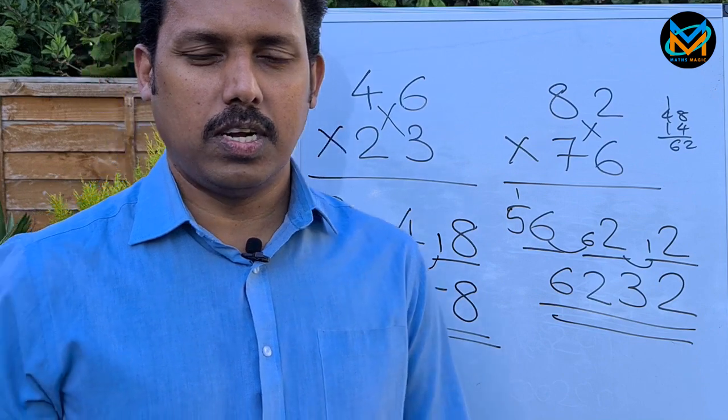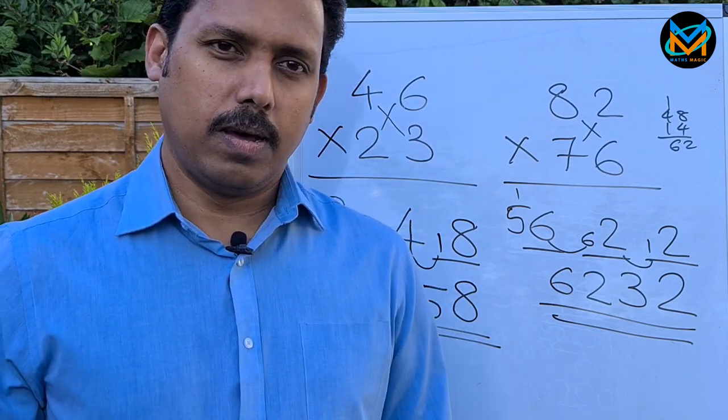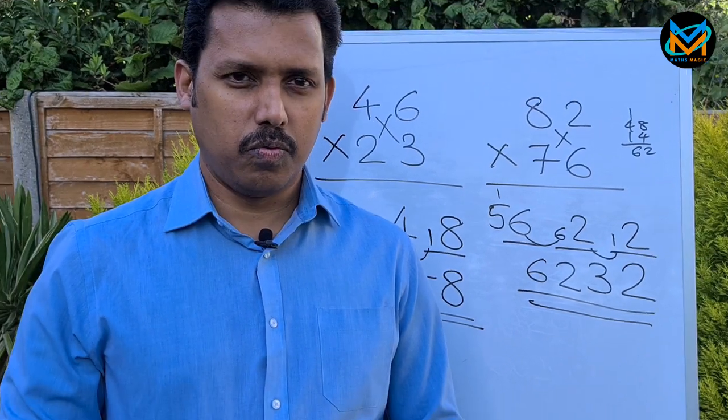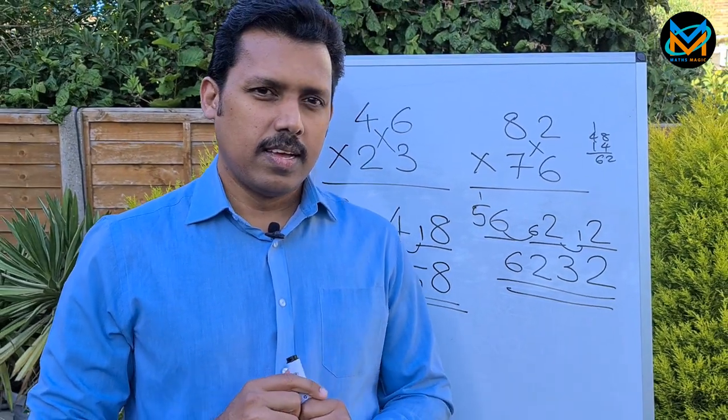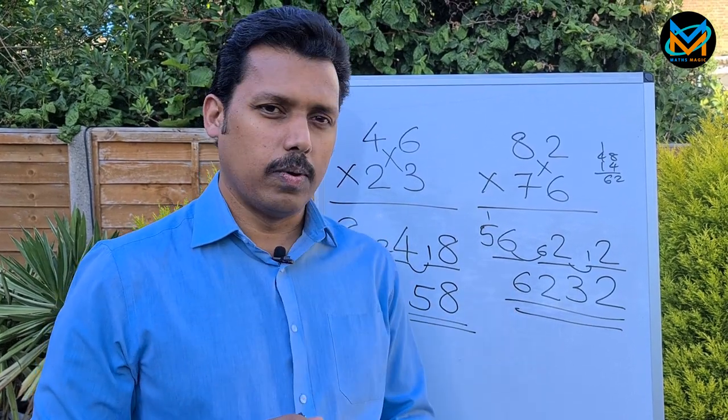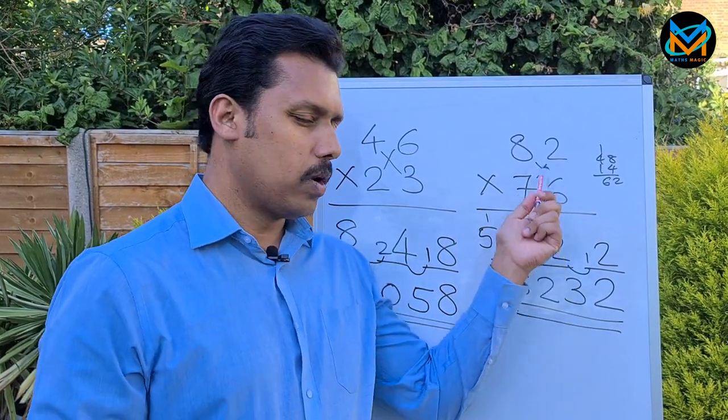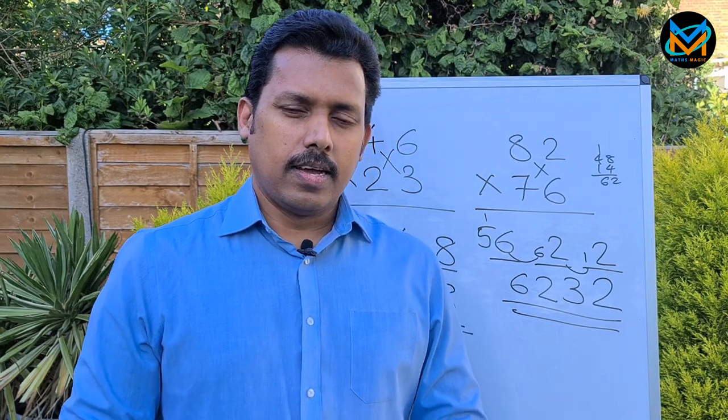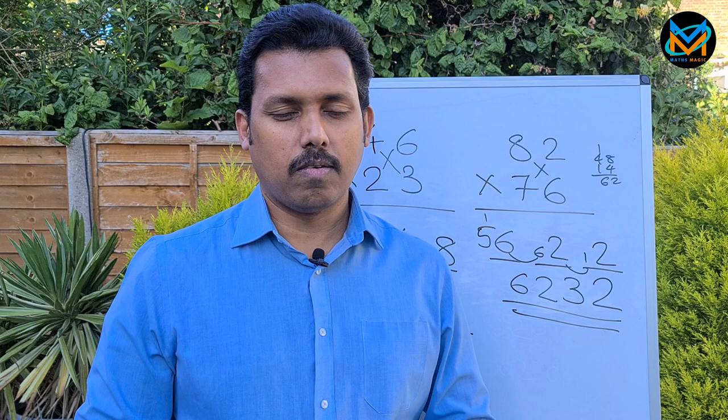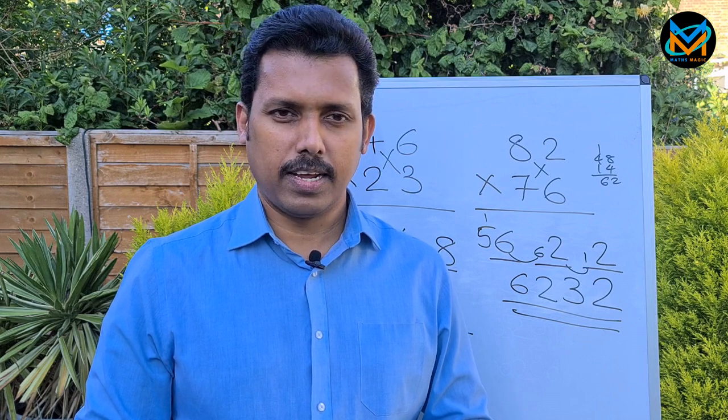Try this trick at home - it will be very useful. When you want to do two-digit by two-digit, just quickly do it. You don't need to multiply one by one. Try it and let me know your feedback. I'll come back with another interesting trick in my next video. Thank you.